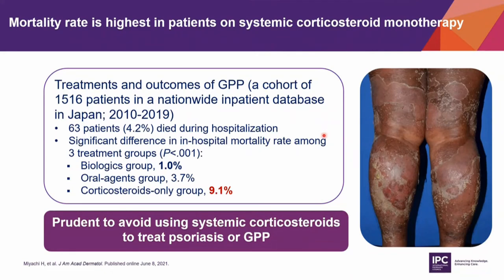It is prudent to avoid using systemic corticosteroid to treat psoriasis or GPP, since use of systemic corticosteroid is associated with GPP flare and also predicts a worse prognosis for patients with GPP.